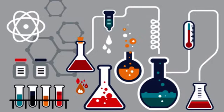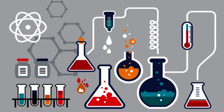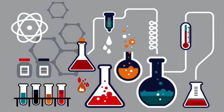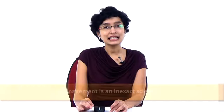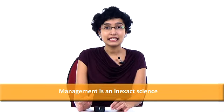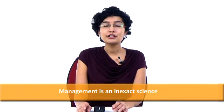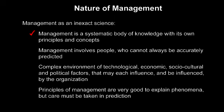Management is both an art and a profession. Why do we call management a science? Management is a science, but unlike physics or mathematics, it is called an inexact science. It is called a science because management is a systematic body of knowledge with its own principles and concepts. However, management involves people who cannot always be accurately predicted, and it operates in a complex environment of technological, economic, socio-cultural, and political factors, each of which influences the organization.